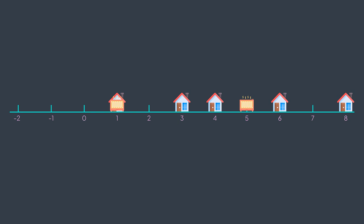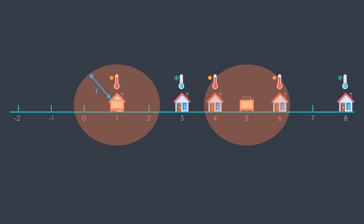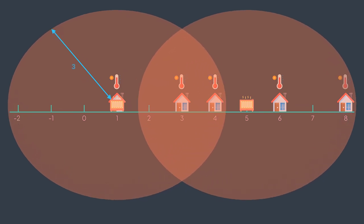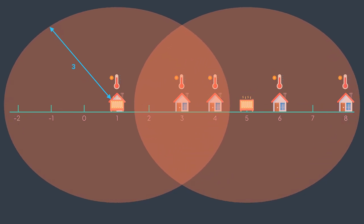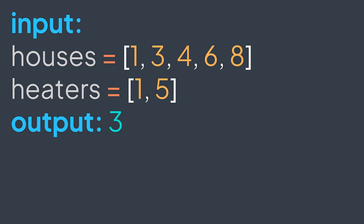For example, with a radius of zero only house one is covered. We increase the radius — now houses one, four, and six are covered, but three and eight are not. We increase the radius again — houses one, three, four, and six are covered. We increase again and now all the houses are covered. So the minimum radius is three.